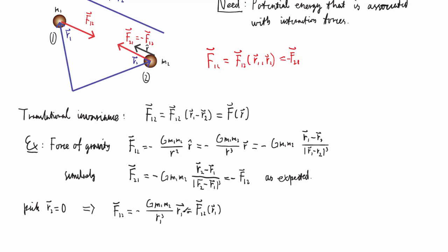Now, we know that this is a conservative force. In fact, we proved it in a previous video. This is conservative. So that means that the curl of F12 of R is zero. So this means that we can write that F12 equals minus the gradient of some potential that depends on R.